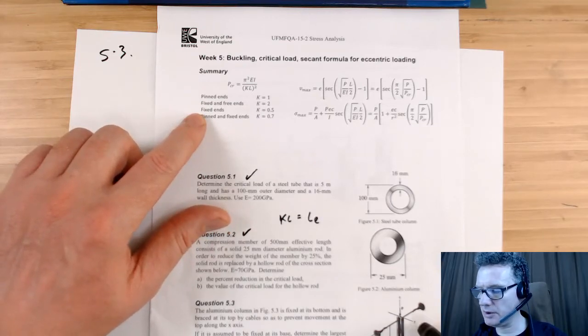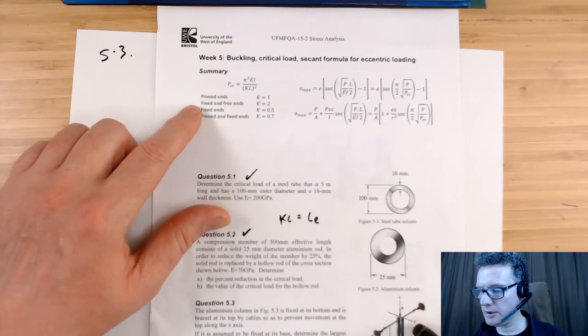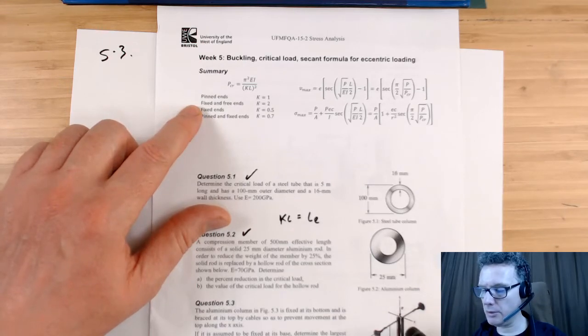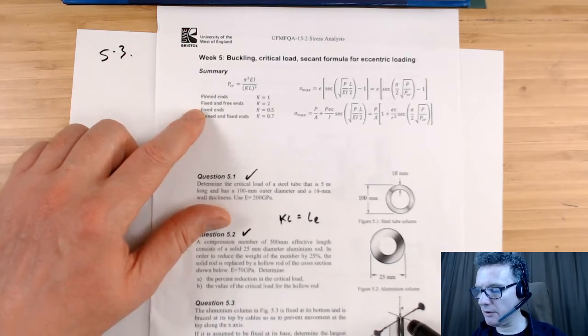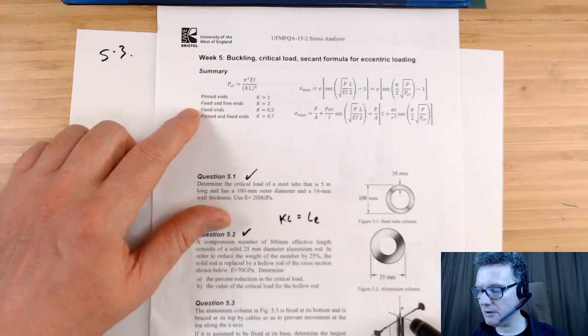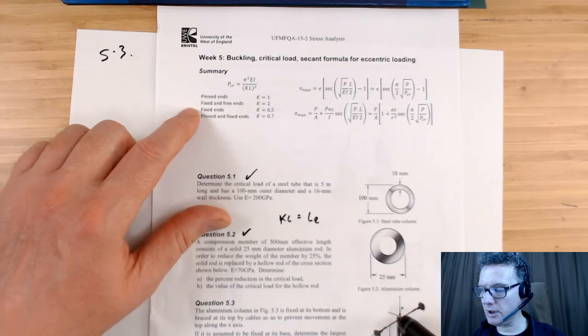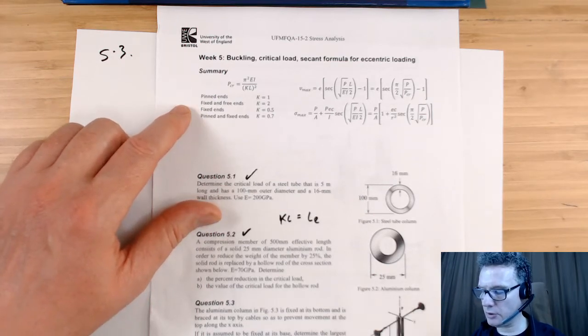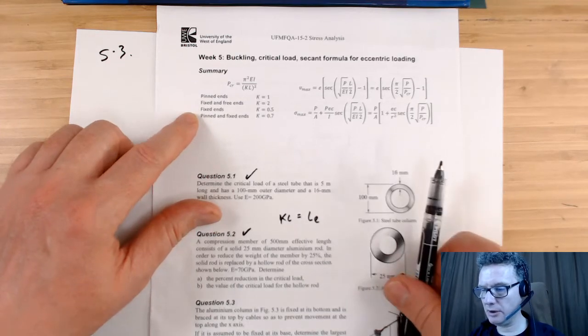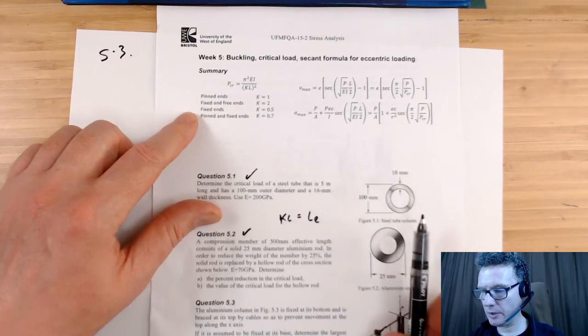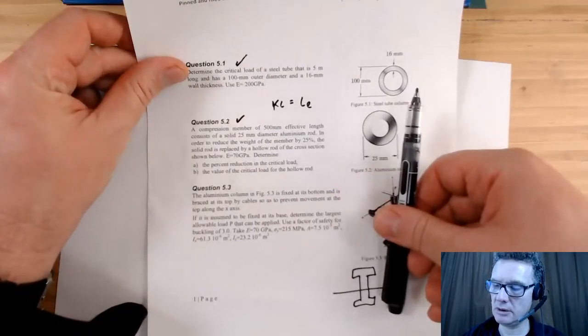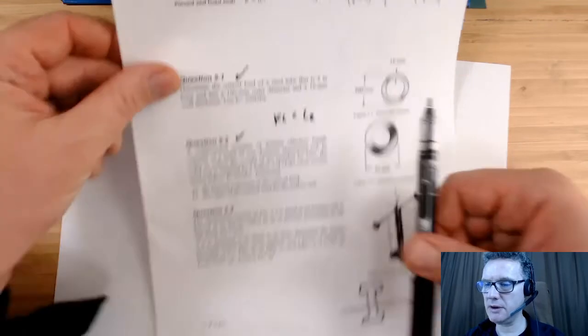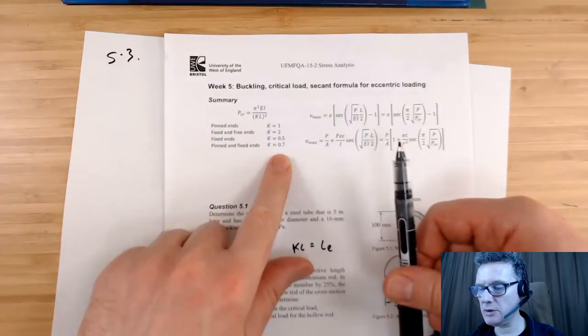So in effect, in one direction it's as if it's allowed free to move, and in the other direction it's as if it's a pin joint. Okay, so the pin joint is if it's buckling off in this direction. So if it's buckling off in this direction here, that's as if it's a pin joint, which means we'll be using 0.7.